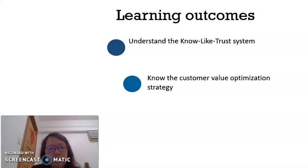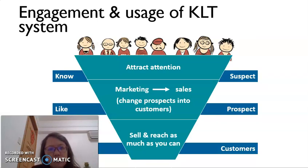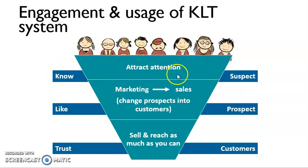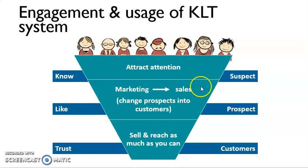In other words, they will continue to buy our product. The first technique is the KLT system, known as Know, Like, and Trust. The first thing we have to do is to attract all the customers — we try to attract their attention and get everybody in the target segment to know our product. Then we try to do some promotion, some sales, to change the prospect into customers.